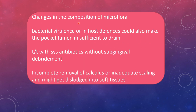There will be changes in the composition of microflora from gram-positive to gram-negative anaerobes. Bacterial virulence or changes in host defenses could also make the pocket lumen insufficient to drain. Treatment with systemic antibiotics without subgingival debridement is also a reason. Incomplete removal of calculus or inadequate scaling, where calculus may get dislodged into the soft tissues, are additional causes.